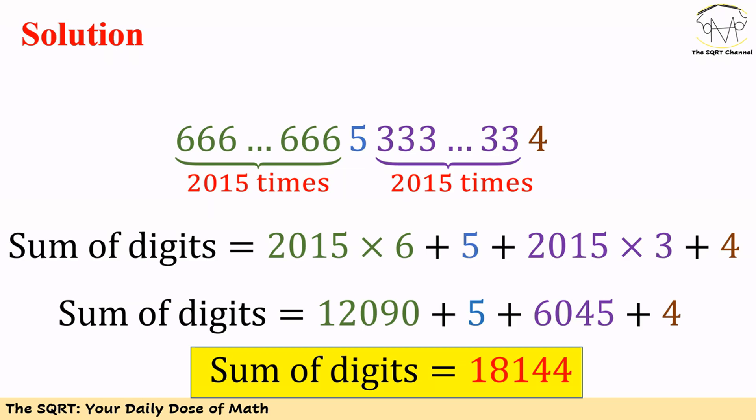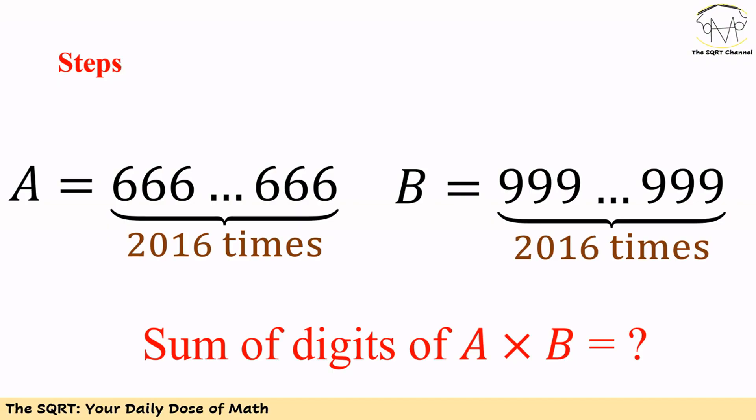We want to calculate the sum of the digits in this big number. It's going to be 2015 times 6, plus 5, plus 2015 times 3, plus 4. If you calculate, you will see that the final sum of the digits is 8144, and that's our answer.